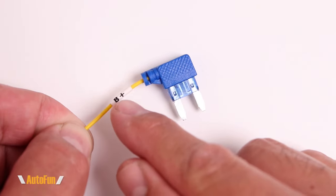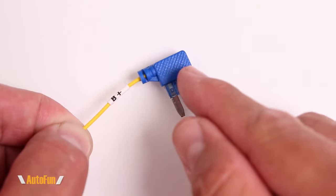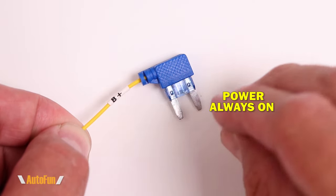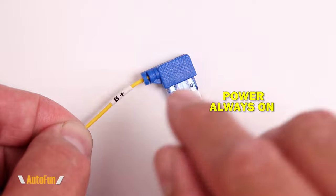Finally we have the B plus wire. This wire has to be connected to a source of power that has power all the time. When the car is on, when the car is off, there should always be power going to the B plus wire.